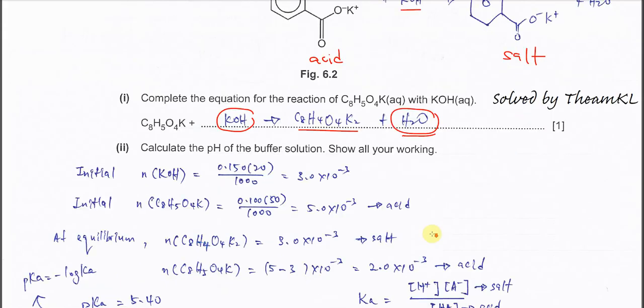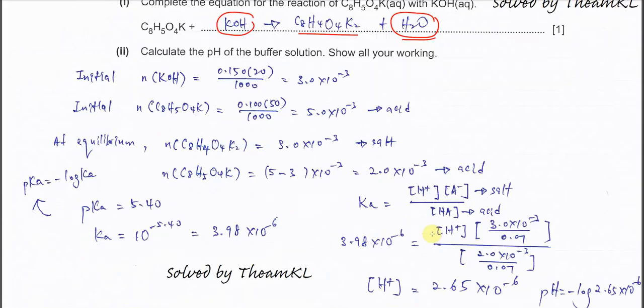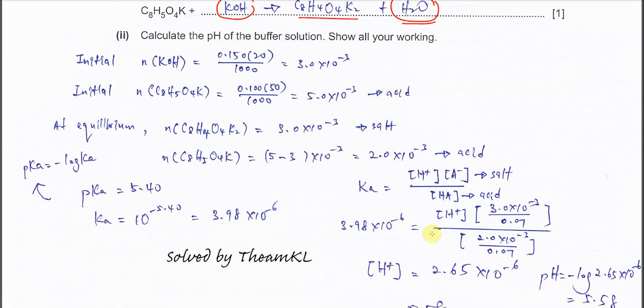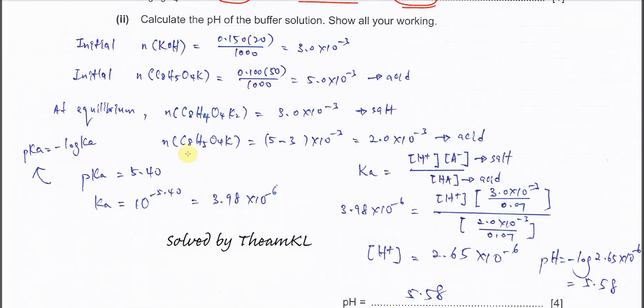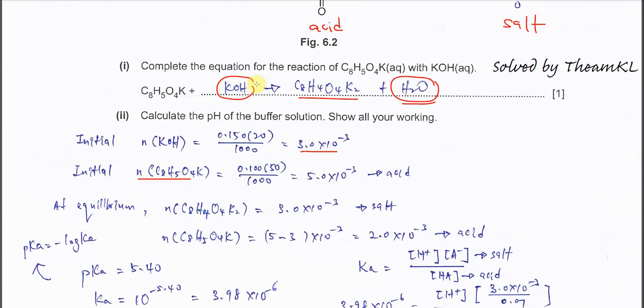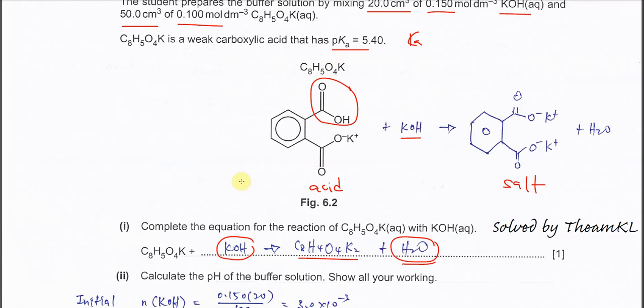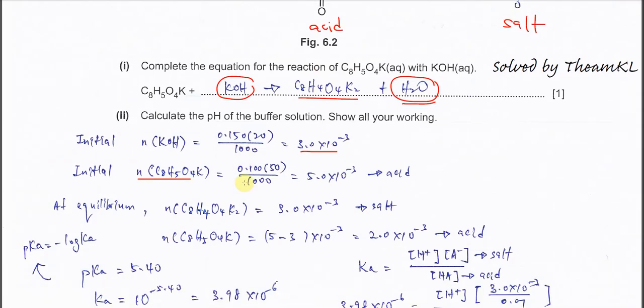After that, you have to do the calculation. This calculation is quite challenging, so you have to understand how to do it. First, calculate the moles of potassium hydroxide that was used. Use MV over 1000, so you get the mole of KOH that was used. And calculate the initial mole of the acid. Follow the information. Use MV over 1000, so you get this mole, 5 times 10 to the negative 3.